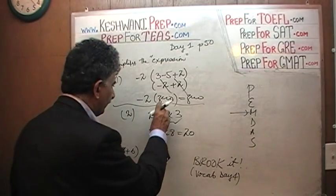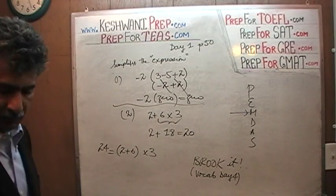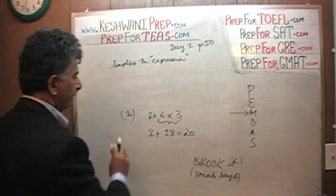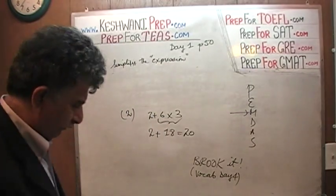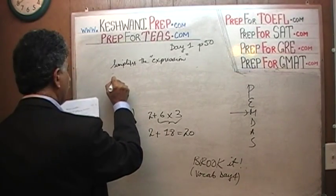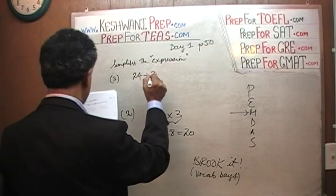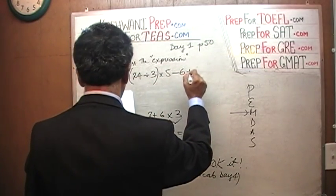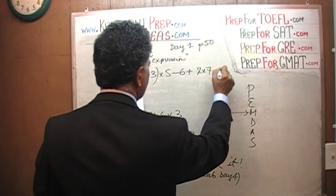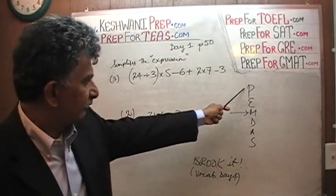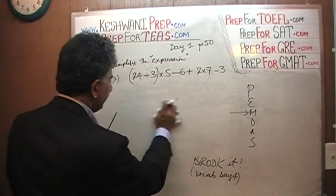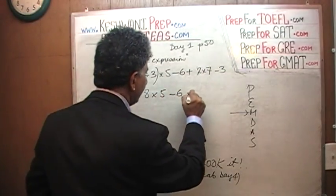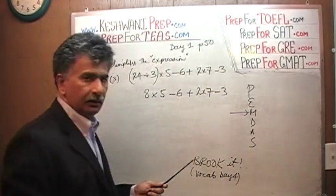So we do 6 times 3 first. Let's go to number three, the last one on the page. 24 divided by 3 times 5 minus 6 plus 2 times 7 minus 3. Again, we go in strict order of operation. The very first one is the parentheses. Since we have parentheses here, we have to take care of the parentheses first. 24 divided by 3 is 8, so we get 8 times 5 minus 6 plus 2 times 7 minus 3. After the parentheses, we have no exponents here.